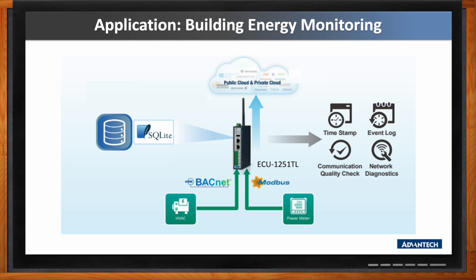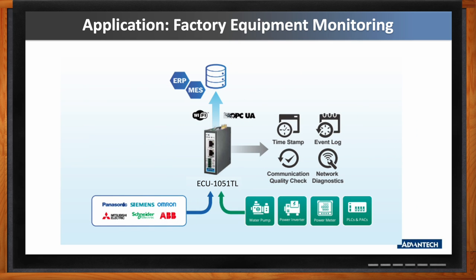Another application is equipment monitoring in the factory. In the factory, there are PLCs from different manufacturers like Siemens, Allen-Bradley, and Rockwell, making it hard to collect all information from those different PLC manufacturers. To collect and integrate the PLC information, the ECU-1051 reads the PLC I/O registers with drivers and then converts it into OPC UA protocol, which is supported by MES and ERP systems. The data from the PLC can link to ERP and MES systems via OPC UA through the gateway. To avoid complicated wiring, a Wi-Fi accessory is added for wireless communication.